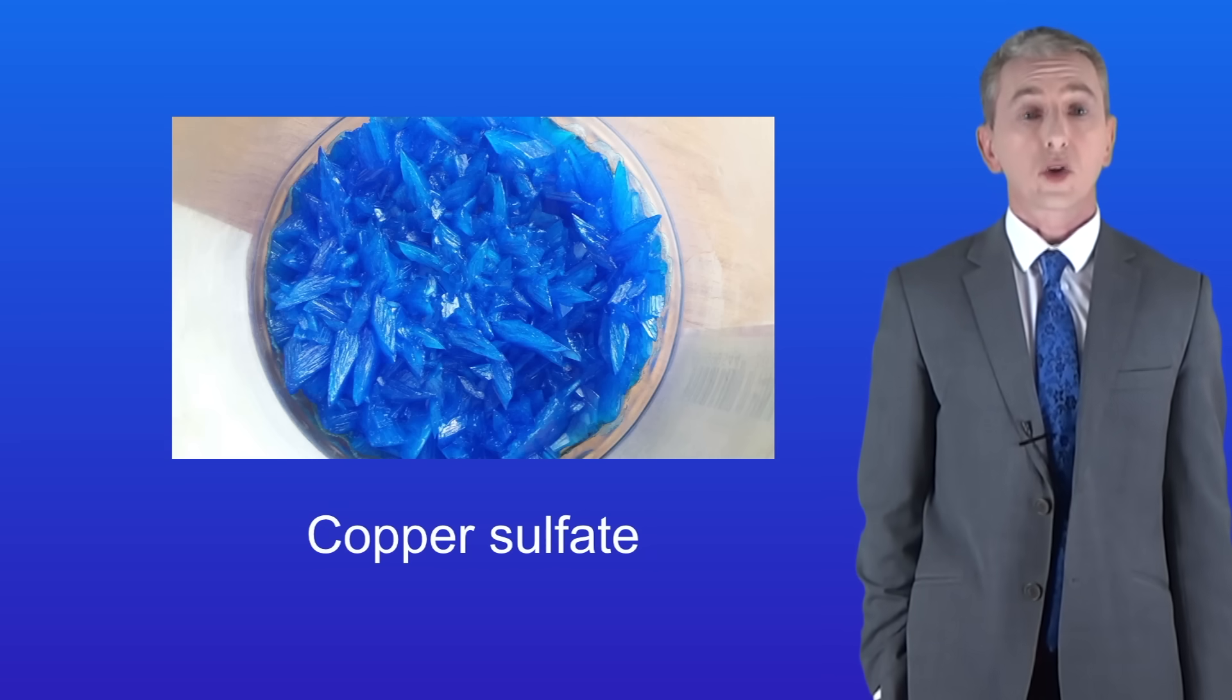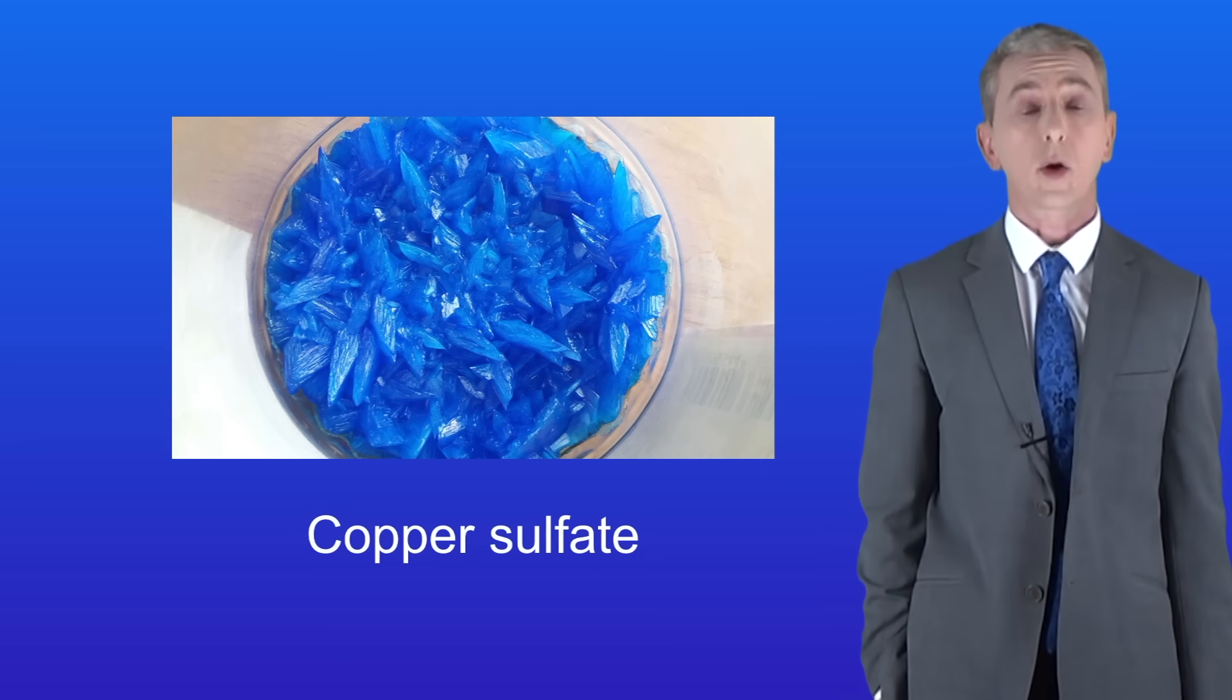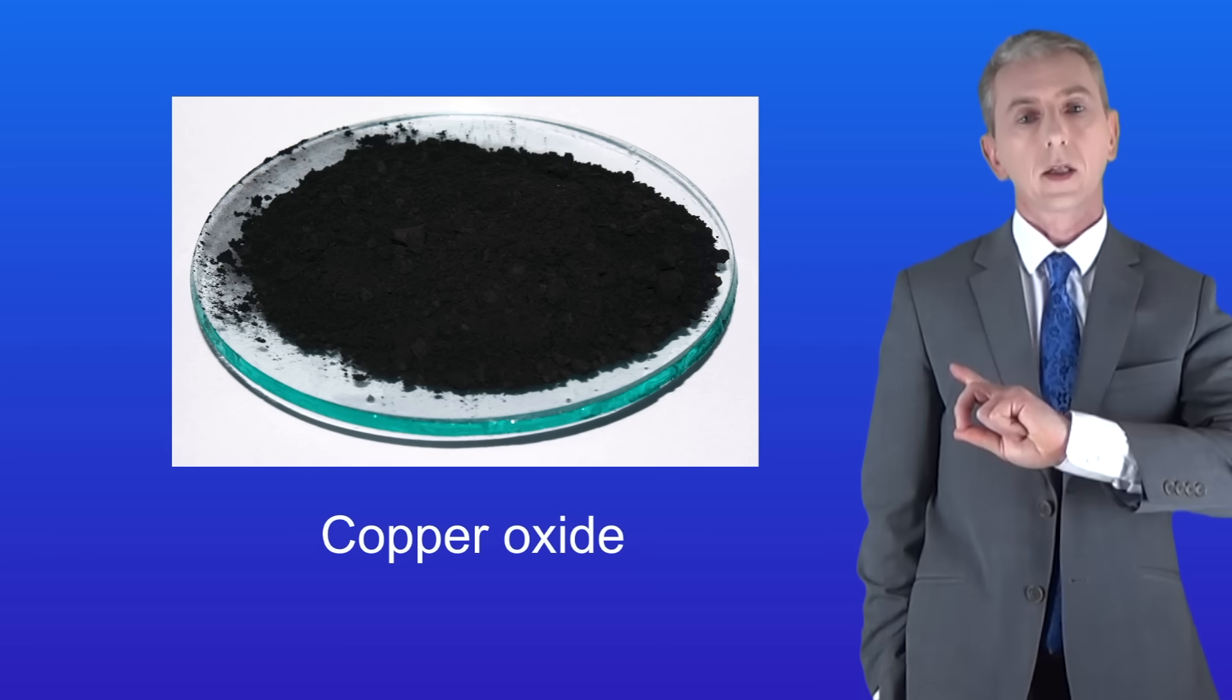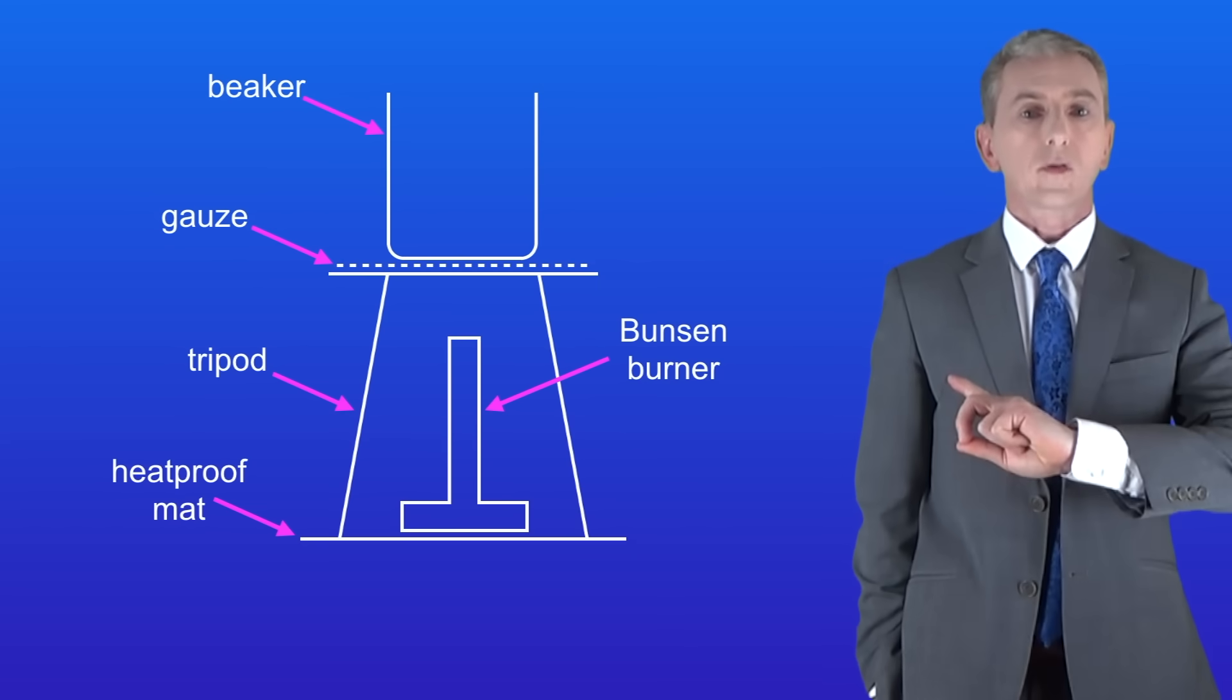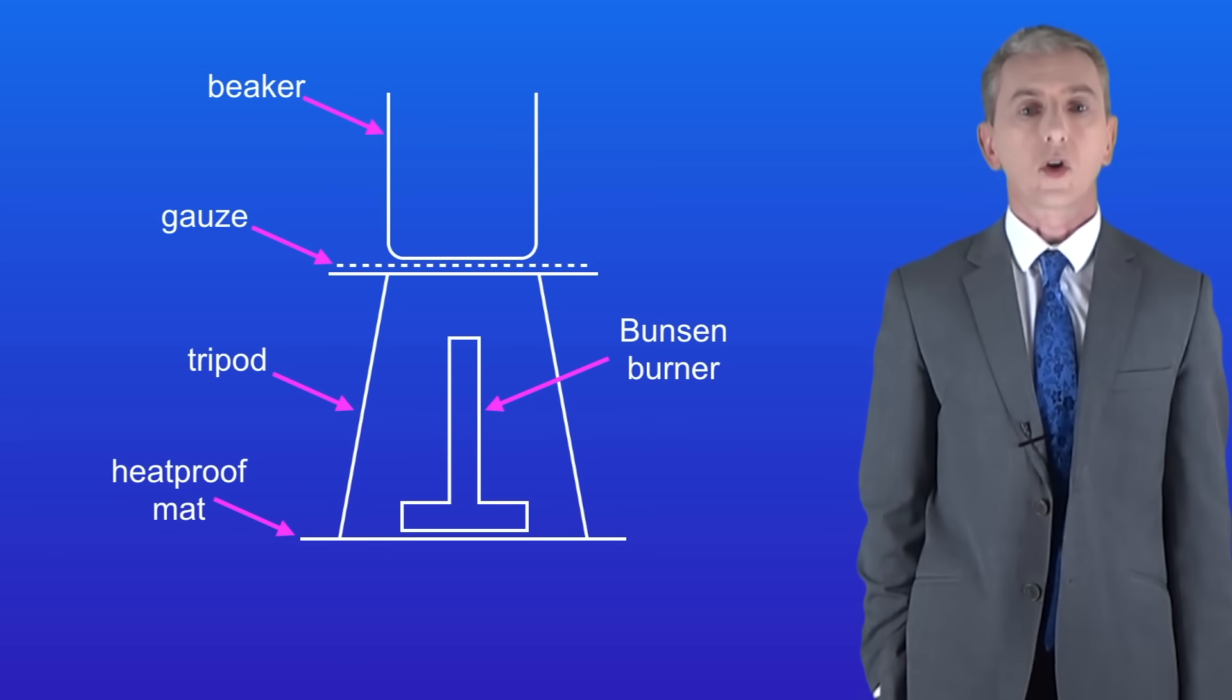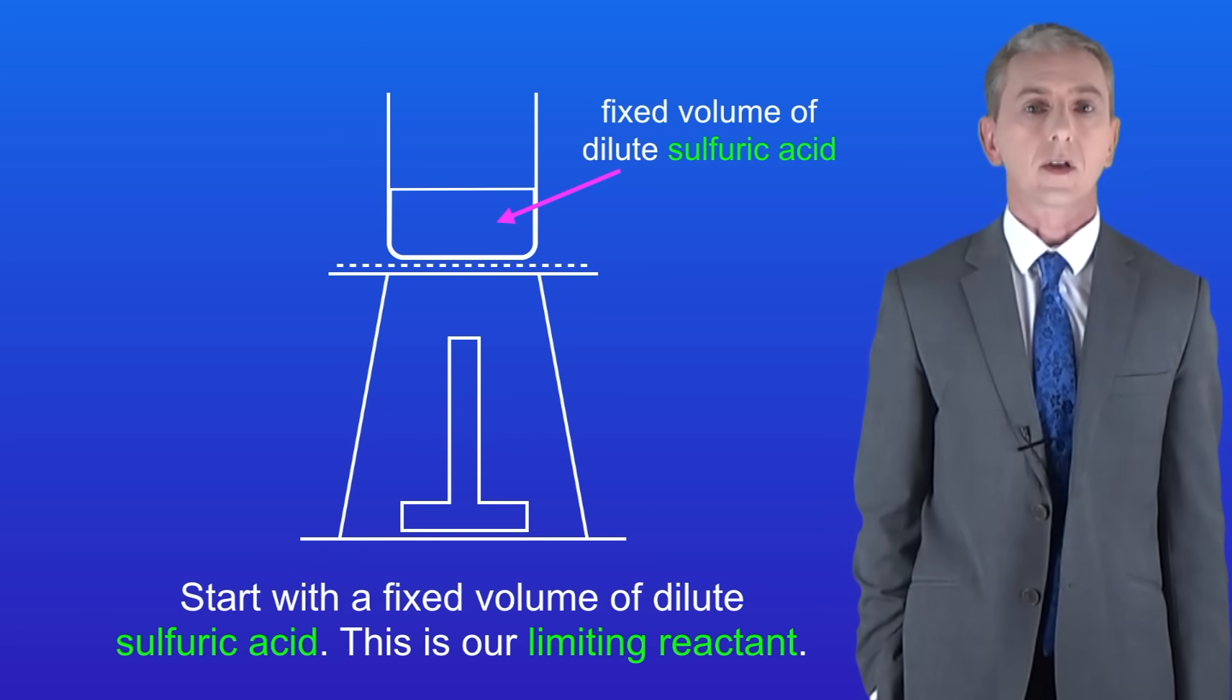We're going to look at the reaction between solid copper oxide and dilute sulfuric acid. But these stages would equally apply to making a salt using a metal carbonate such as copper carbonate. I'm showing you copper oxide here. As you can see it's black powder. So here's the equipment that we're going to use for the first stage which is making the soluble salt.